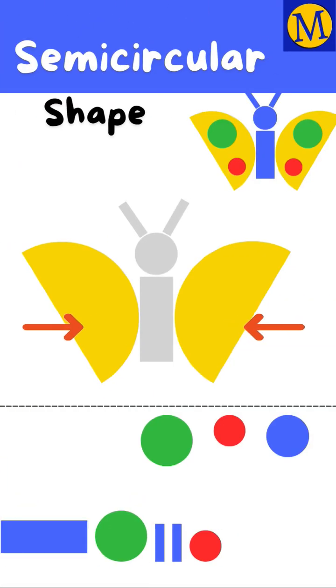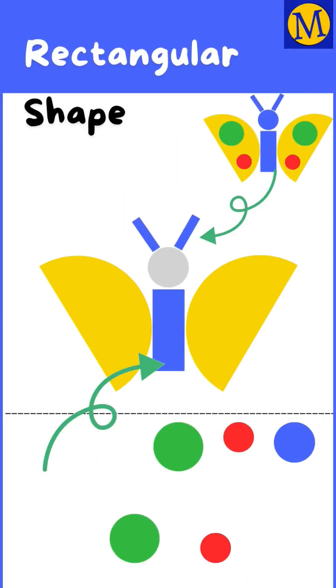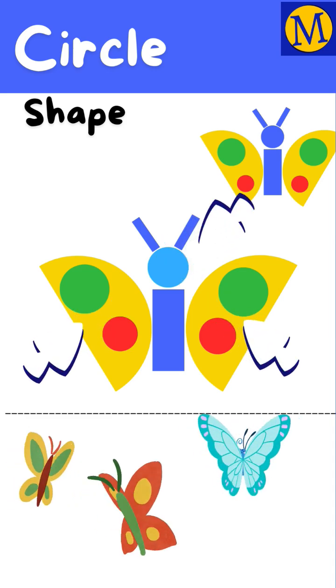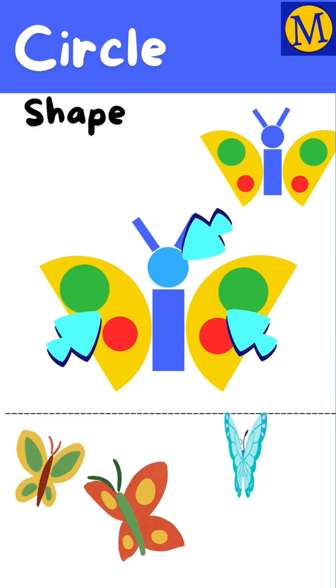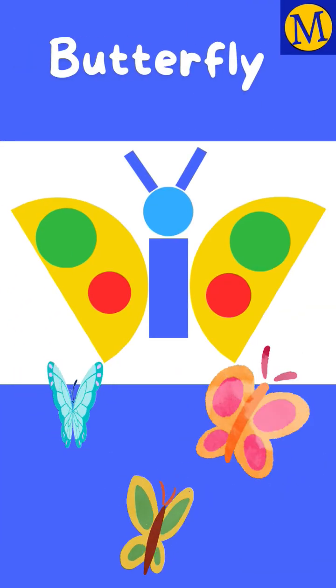Semicircular shape. Rectangular shape. Circular shape. And, the butterfly is ready.